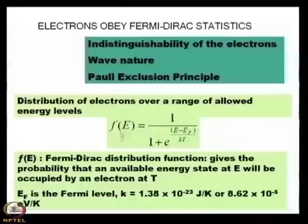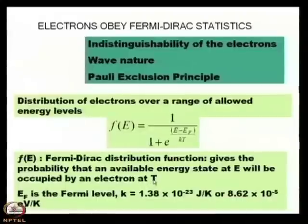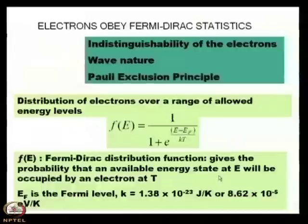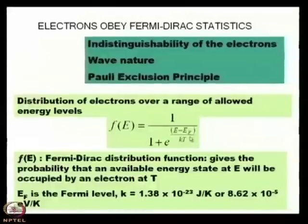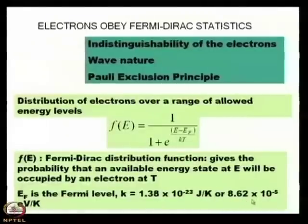This f(E) is known as the Fermi-Dirac distribution function, and it gives the probability that an available energy state at energy E will be occupied by an electron at temperature T. The temperature is very important — if you change the temperature, the energy state will also change. In this expression, E_f is known as the Fermi level, and k is the Boltzmann constant, whose value is 1.38×10⁻²³ J/K or 8.62×10⁻⁵ eV/K.